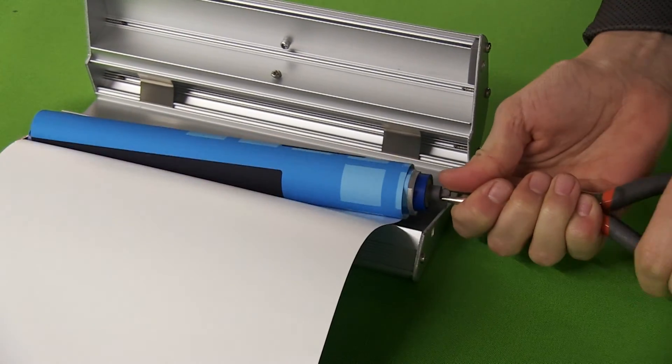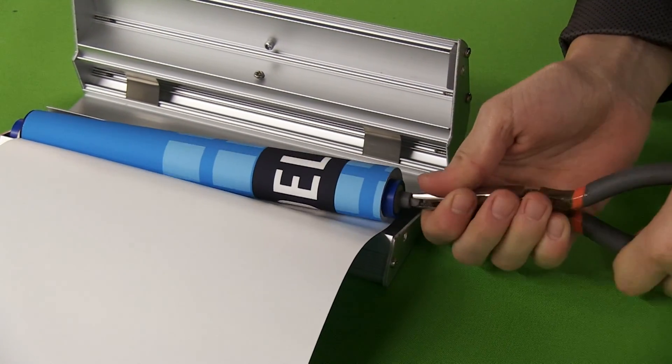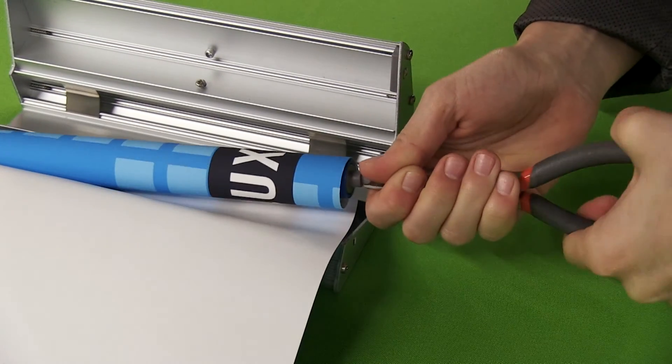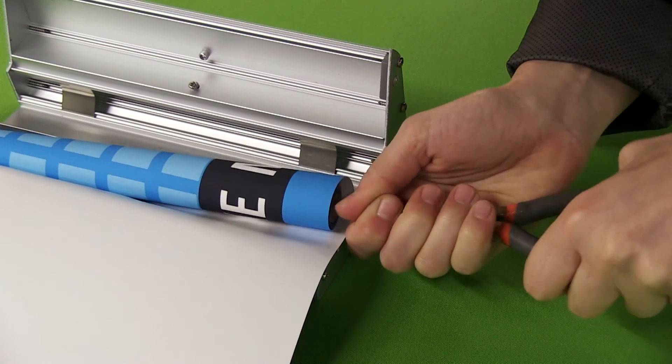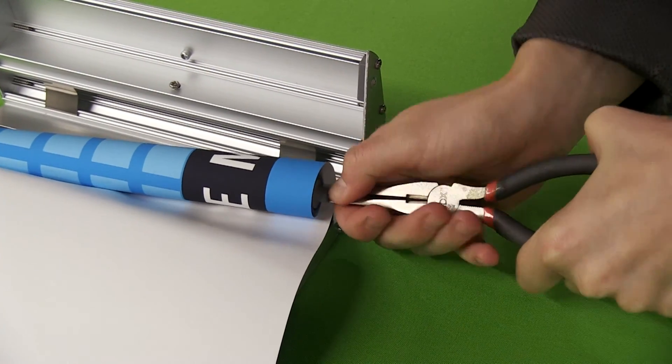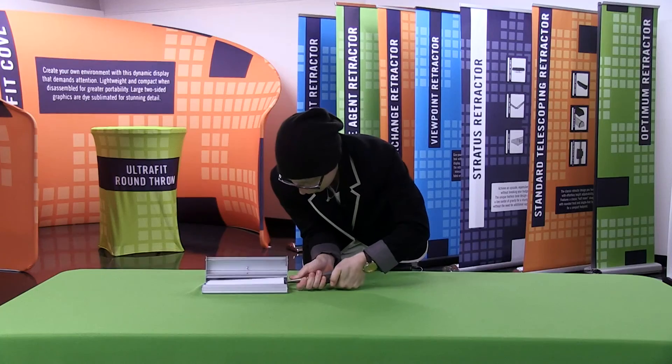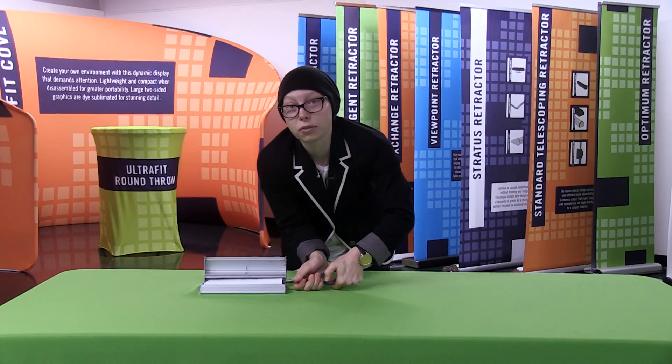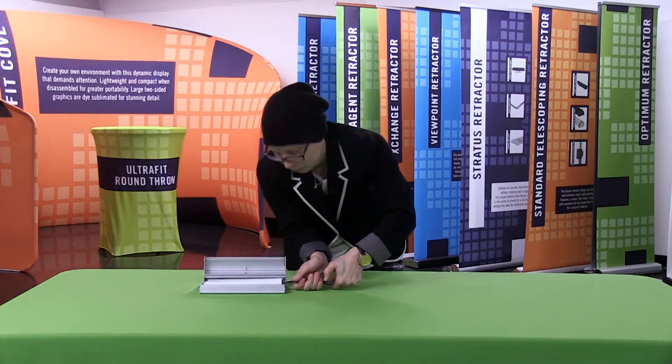Now as you turn the roller, your banner should start to retract back into the base. As you're turning, you want to make sure that the other end stays in the base. Once the graphic has retracted into the base, you're going to do three more turns.